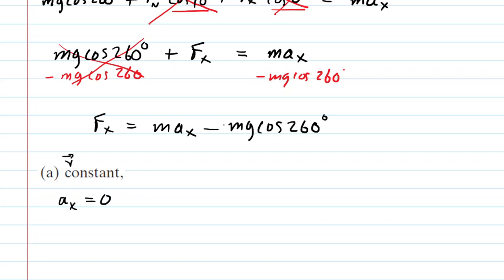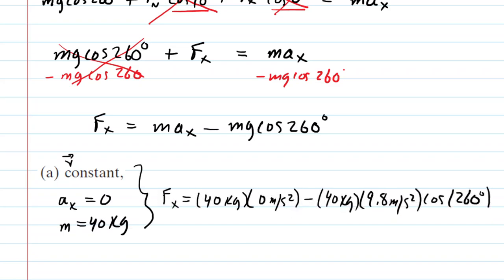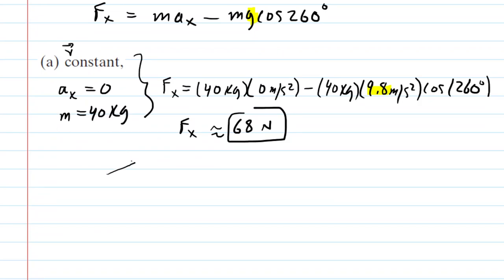The mass of the skier is given as 40 kilograms and g equals 9.8 meters per second squared. Plugging everything in, f sub x is approximately 68 newtons. Notice it came out positive, so our assumption that f sub x was pointing uphill in the positive x direction was correct. The direction of f sub x in Part a is indeed uphill.